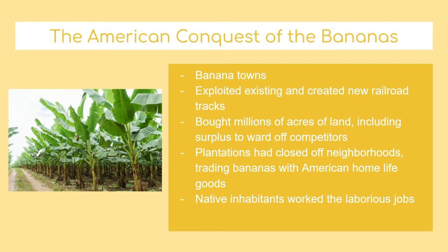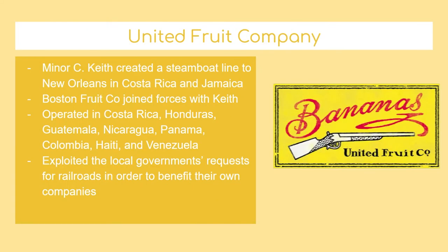There was one major monopoly in the fruit industry called United Fruit Co. The first person to make a profit off of Central American banana farming was an entrepreneur called Minor C. Keith. He originally intended on making a railroad in Costa Rica, but quickly changed his mind to a steamboat line to transport bananas to the U.S. However, Keith's business was slowly falling apart because he was in crippling debt. So one of his competitors, Boston Fruit Co., bought his company and they became United Fruit Co. Together, they joined forces to reinstate tyranny over these poor countries.